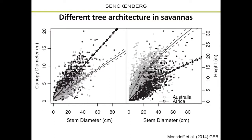What we then did was re-parameterize the model with plant traits or characteristics of Australian savannahs. One example is tree architecture — comparing Australian savannah trees and African savannah trees: for a given stem diameter, African trees typically have a higher canopy diameter, while Australian trees are typically taller. We used several of these equations — different traits like architecture, specific leaf area, VCmax — and re-parameterized our vegetation model ADGVM for Australian savannahs.